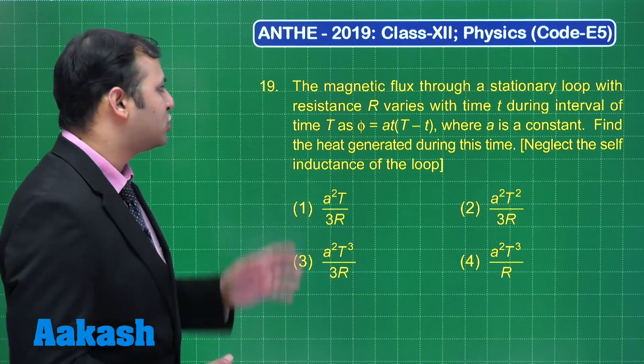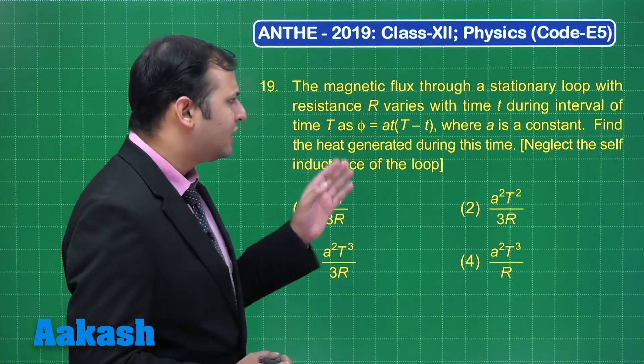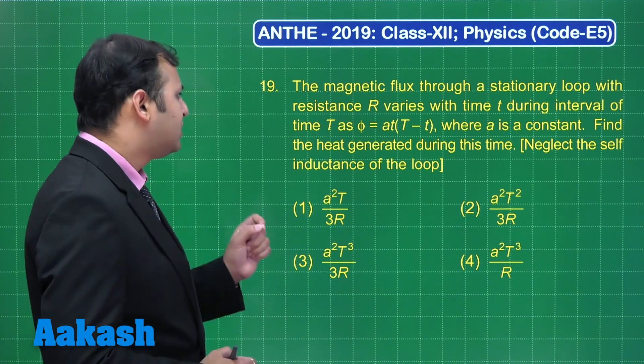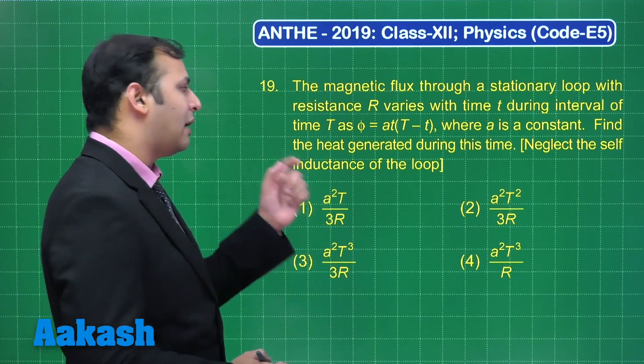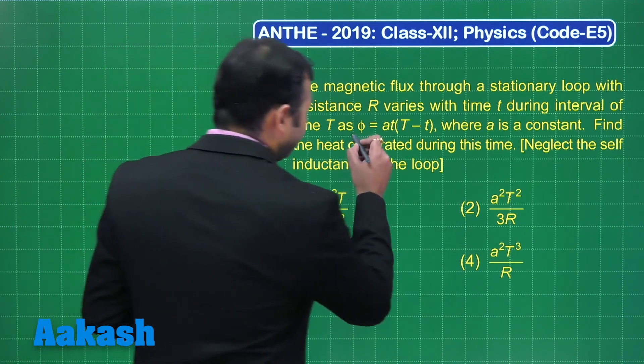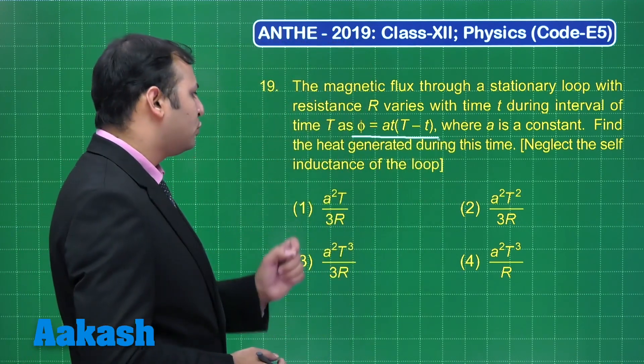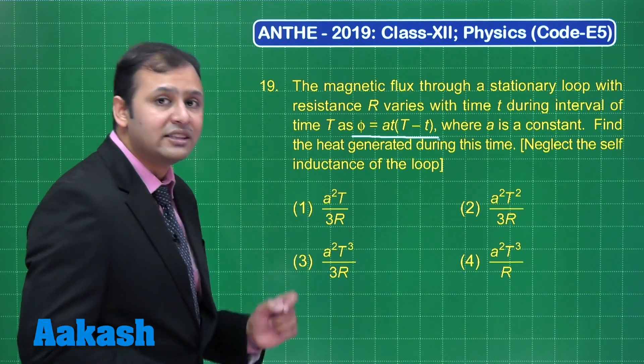Let us take our next question, that is question number 19. The magnetic flux through a stationary loop with resistance R varies with time during the interval of time capital T, and the relation is given by this where A is a constant. We have to find the heat generated during this time.